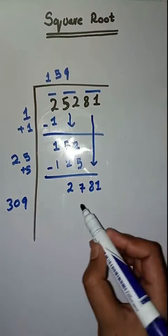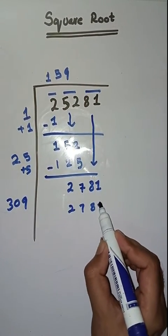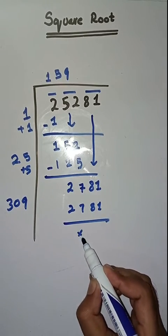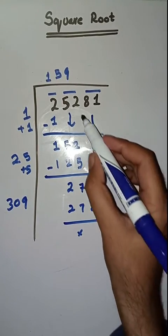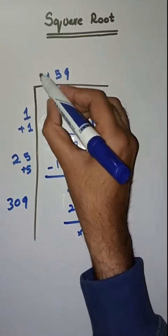309 times 9 is 2781. So it is completely solved. Square root of 25281 is 159.